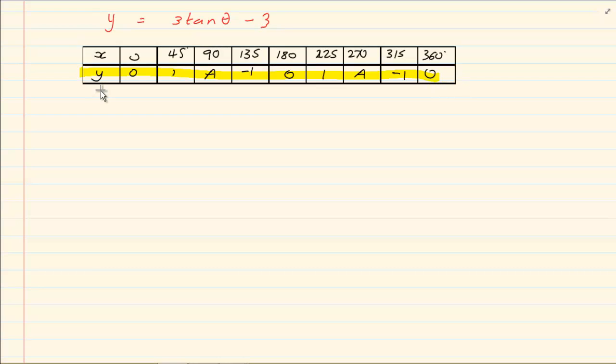Now when we are looking at the tan graph we are still busy with the mother graph. And what are we doing? Multiplying by 3, subtracting 3. So we are going to multiply by 3. So we have 0, 3 and asymptote is still going to stay. Minus 3, 0, 3 again an asymptote, minus 3 and 0.